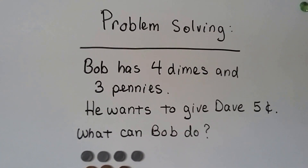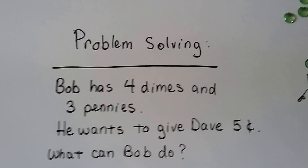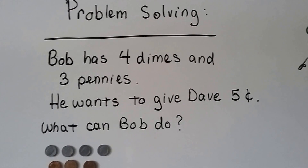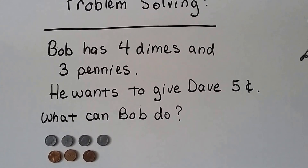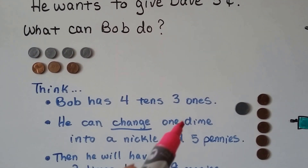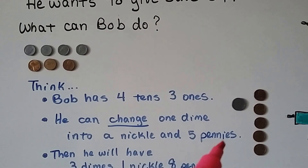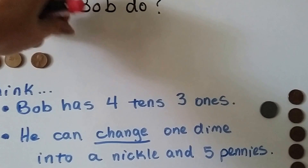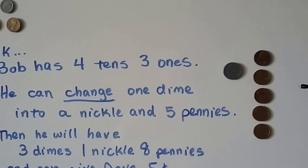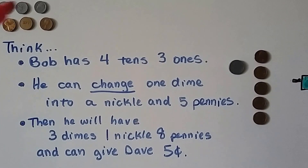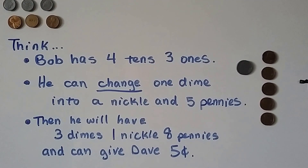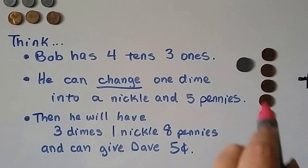Let's try some problem solving. Bob has 4 dimes and 3 pennies, and he wants to give Dave 5 cents. So what can Bob do? He's got 4 dimes and 3 pennies — that's 4 tens and 3 ones. He can change 1 dime and regroup it into a nickel and 5 pennies. He can take one of these dimes worth 10 cents and trade it for a nickel and 5 pennies, because that's 5, 6, 7, 8, 9, 10 — the same value as a dime. Now he's got 3 dimes, 1 nickel, and 8 pennies, and he can give Dave 5 cents. He can either give Dave the 5 pennies or give him the nickel.